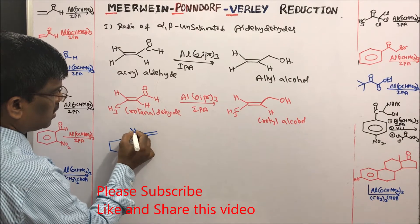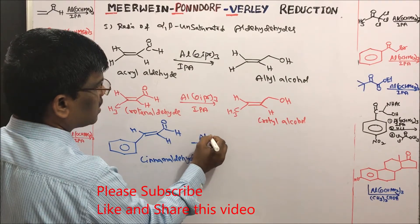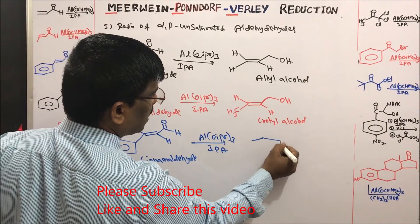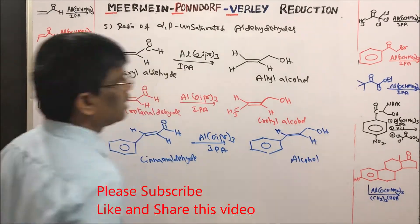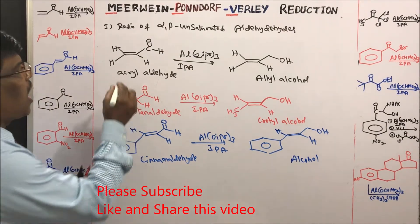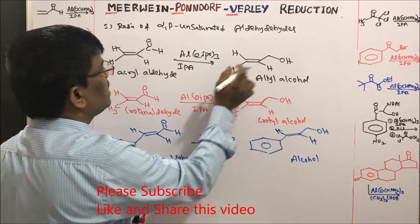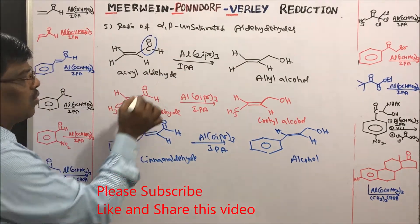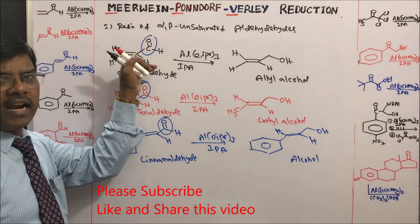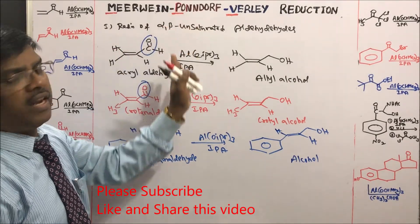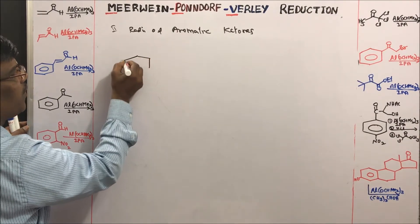If a methyl group is replaced by phenyl, the compound is cinnamaldehyde. In the presence of aluminum isopropoxide in isopropyl alcohol, cinnamaldehyde gives cinnamyl alcohol. You can reduce alpha-beta unsaturated aldehydes to alpha-beta unsaturated alcohols — only the aldehyde is reduced and the double bond remains unreactive toward MPV reduction.